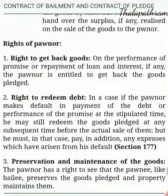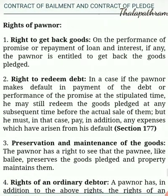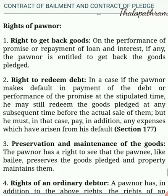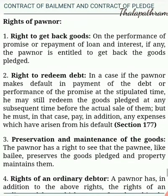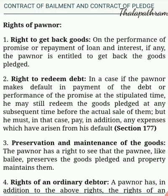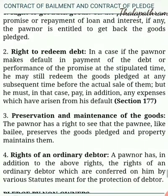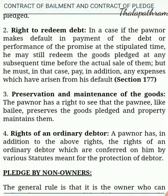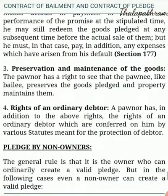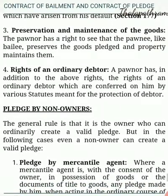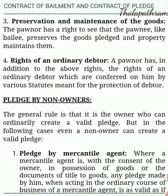Rights of Pawner. First, right to get back goods: On the performance of the promise or repayment of the loan and interest, if any, the pawner is entitled to get back the goods pledged. Second, right to redeem debt: In a case if the pawner makes default in the payment of the debt or performance of the promise at stipulated time, he may still redeem the goods pledged at any subsequent time before the actual sale of them, but he must in that case pay in addition any expenses which have arisen from his default. Section 177. Third, preservation and maintenance of the goods: The pawner has a right to see that the pawnee, like a bailee, preserves the goods pledged and properly maintains them. Fourth, right of an ordinary debtor: A pawner has, in addition to the above rights, the rights of an ordinary debtor which are conferred on him by various statutes meant for the protection of the debtor.